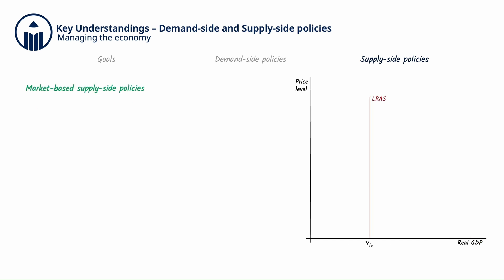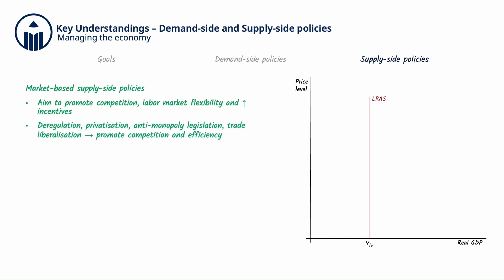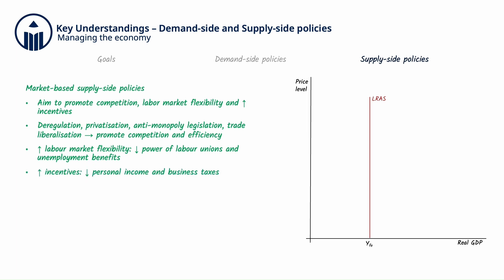Market-based supply-side policies aim to promote competition, labour market flexibility, and to increase incentives for worker productivity and business investment. This is accomplished through policies such as deregulation, privatization, anti-monopoly legislation, and trade liberalization, which all promote competition and efficiency. Increasing labour market flexibility can be done by decreasing the power of labour unions and lowering unemployment benefits, while increasing incentives can be done by lowering personal income and business taxes. Many of these market-based policies also have demand-side effects and also impact AD.